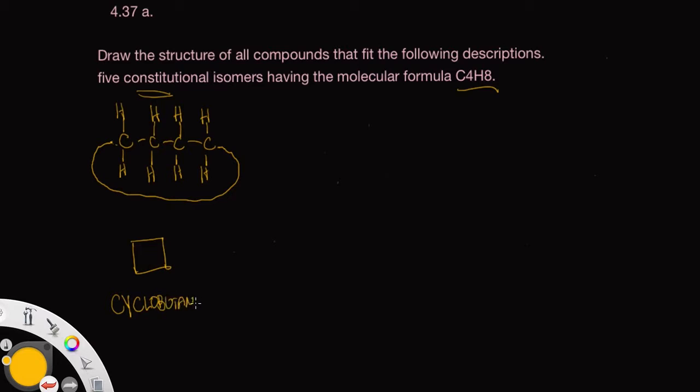Now we could possibly have cyclopropane, which is three carbons in a ring, and then leave the last carbon hanging off the end there, and this would be methyl cyclopropane.